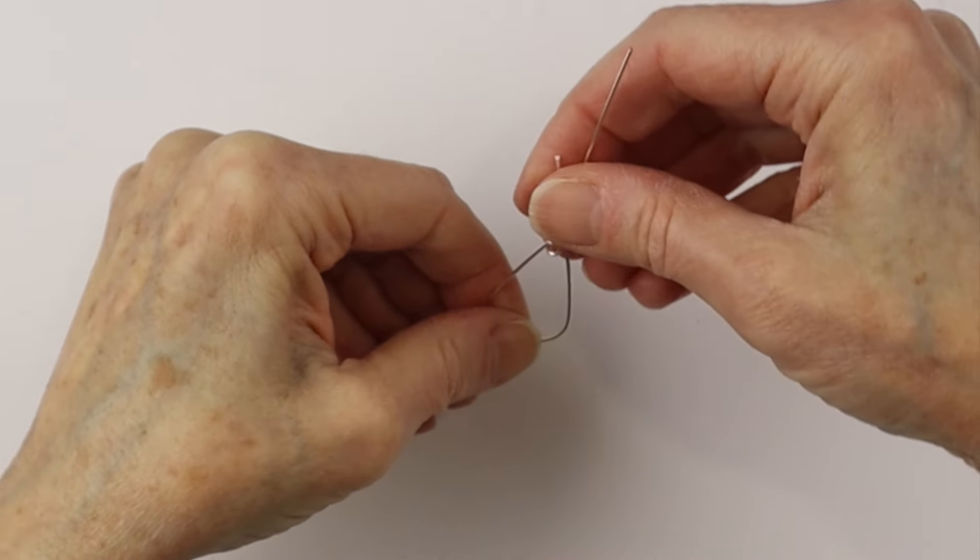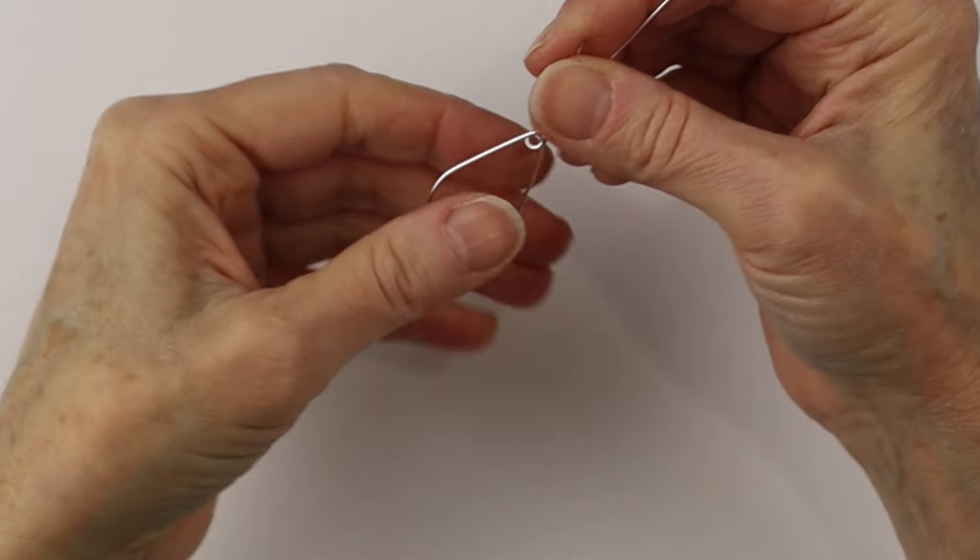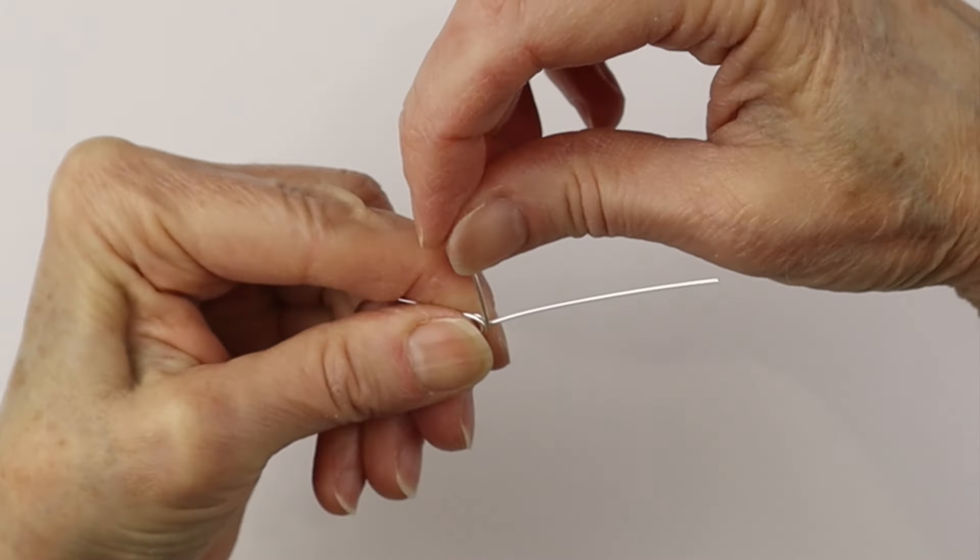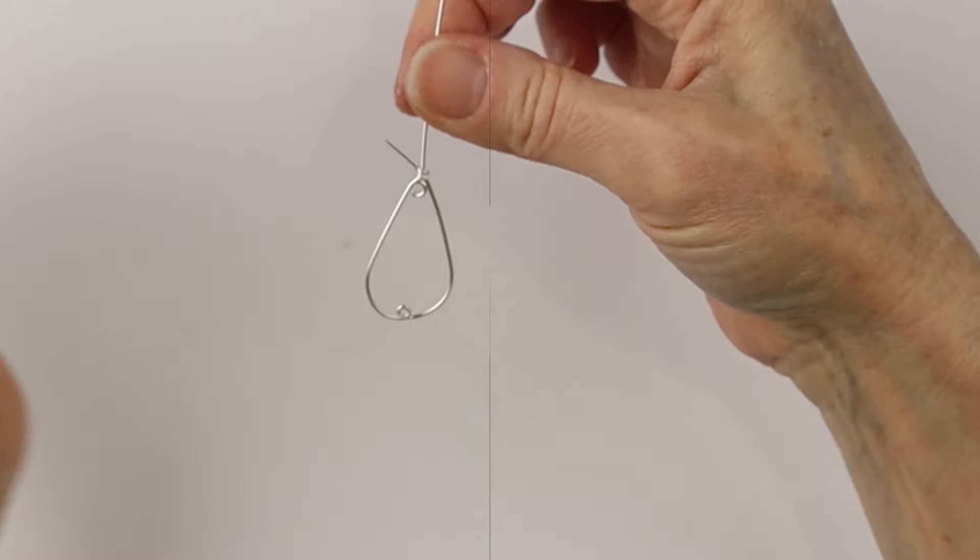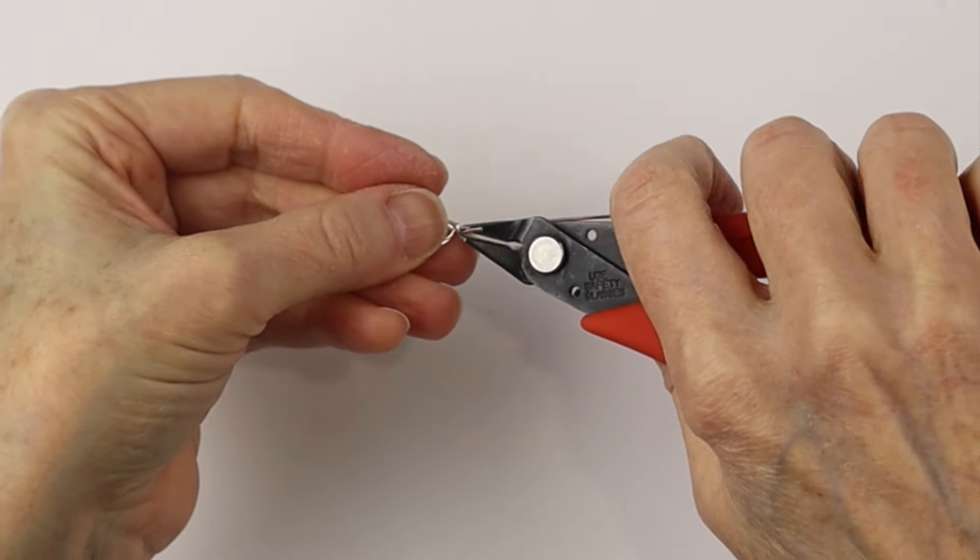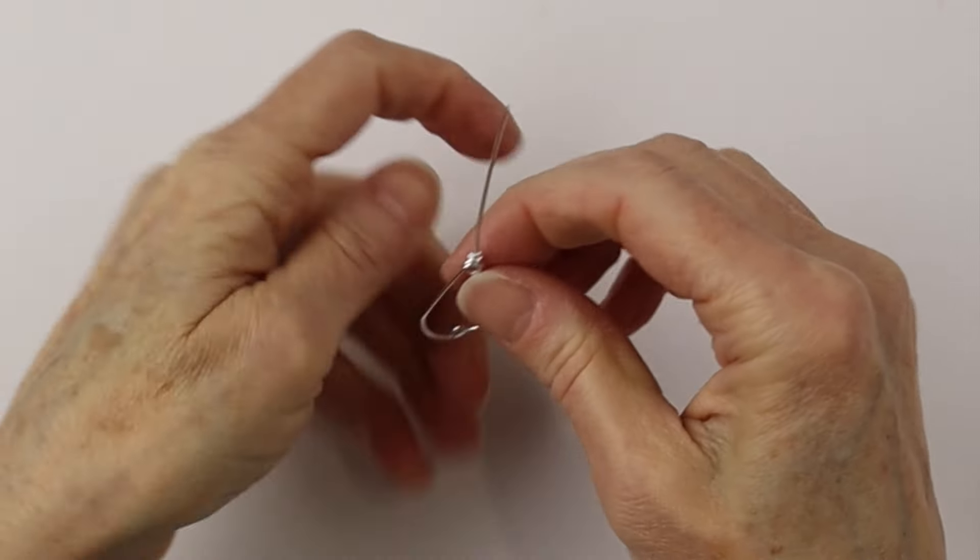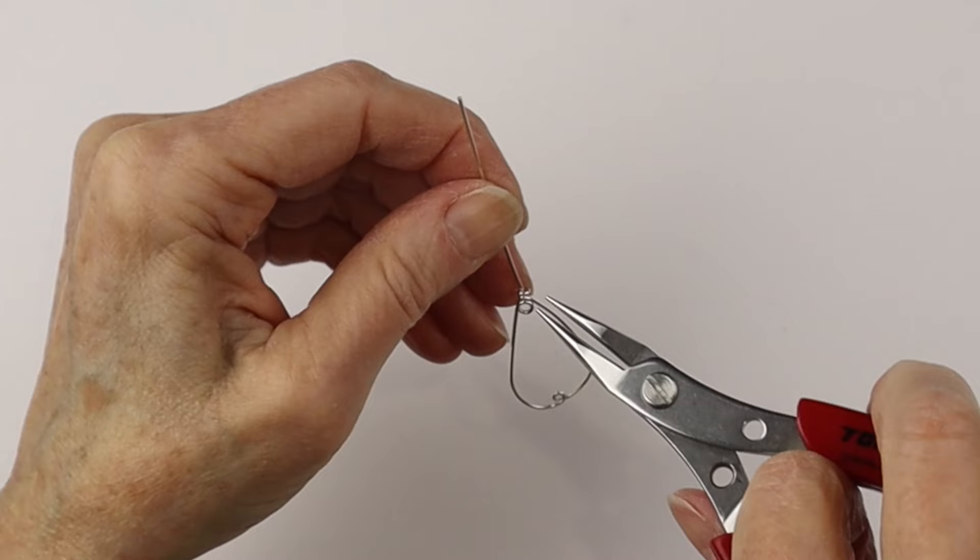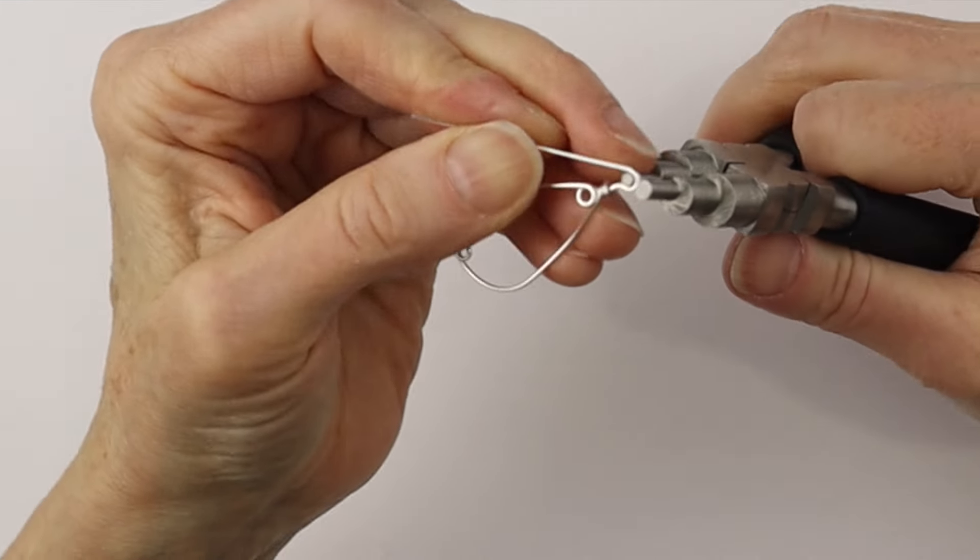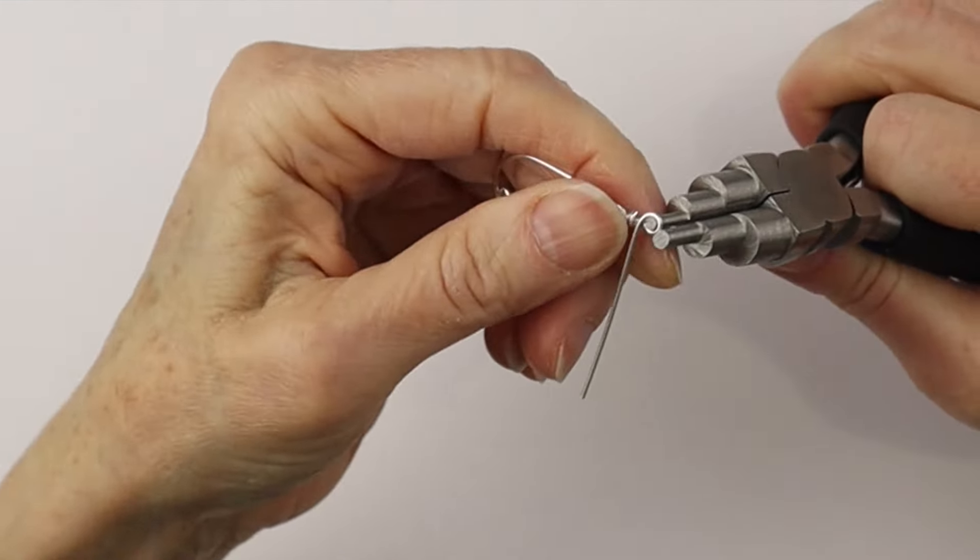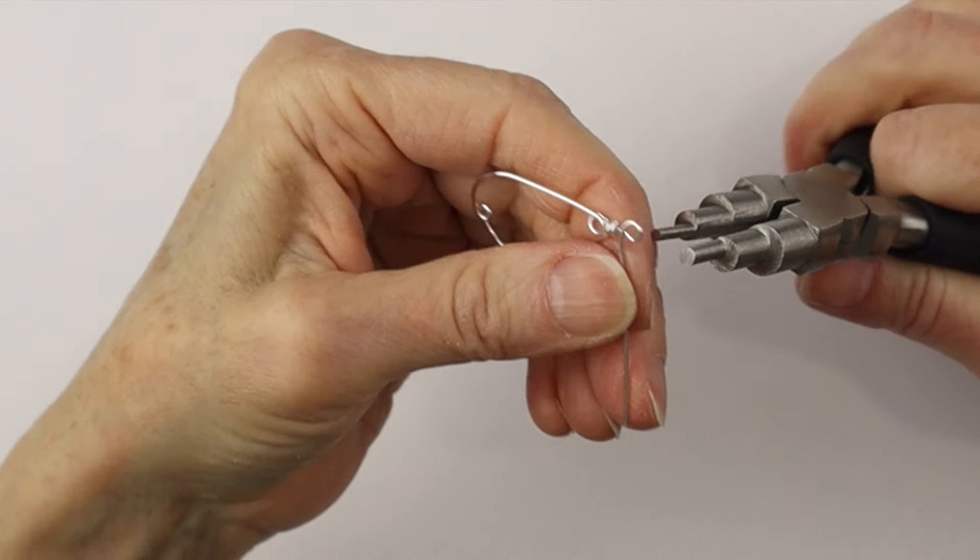Adjust it so it's nicely centered. Now hold it firmly with your thumb and finger and bend that end around over the top loop. Clip it flush. These are the Xuron flush cutters. We are going to just bend that edge out a bit to form the loop to hang the earring hook on, so make a nice centered loop there.